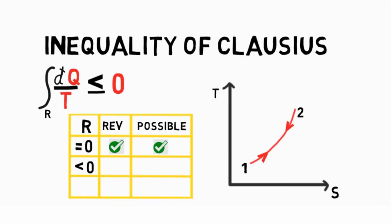If R is less than zero, then the cycle is irreversible but possible. If R is greater than zero, then the cycle is impossible since it violates the second law.